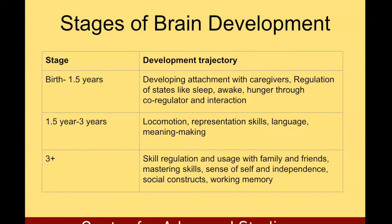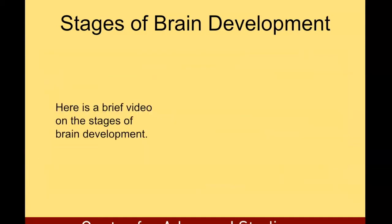From birth to one and a half years, the developmental trajectory includes developing attachment with caregivers and regulation of states like sleep, awake, and hunger through co-regulation and interaction. From one and a half years to three years, there is locomotion, representation skills, language, and meaning making. From three years and on, there is skill regulation, usage with family and friends, mastering of skills, a sense of independence and self, social constructs, and working memory.